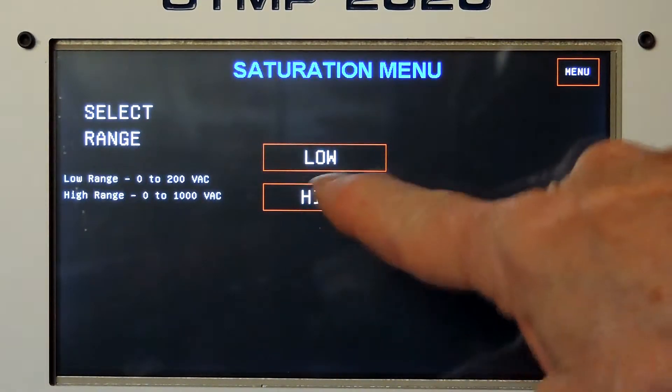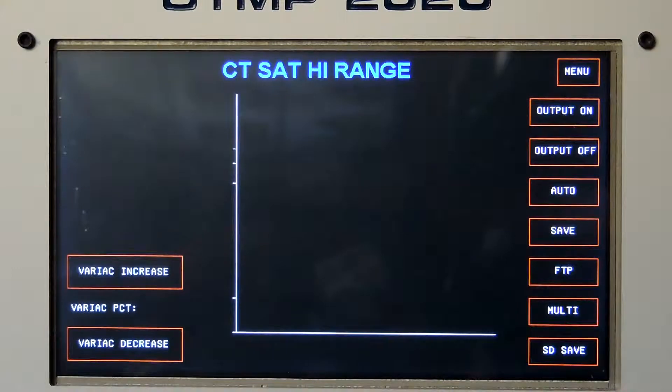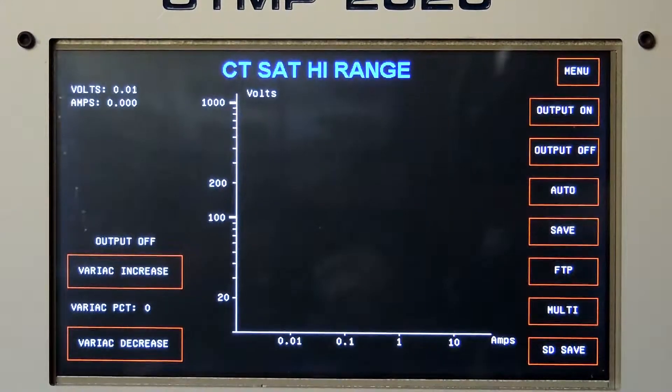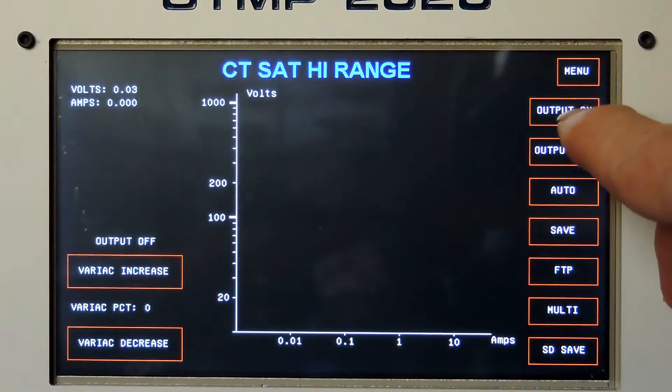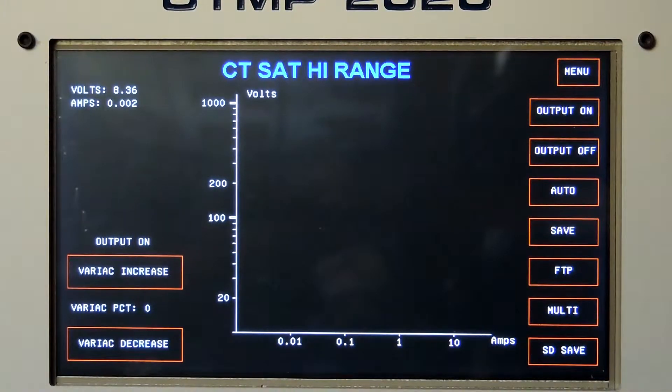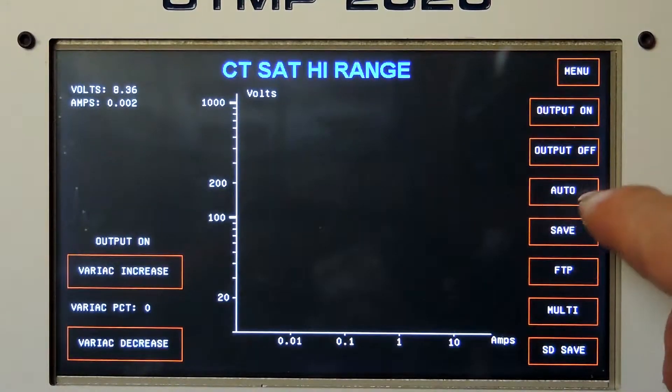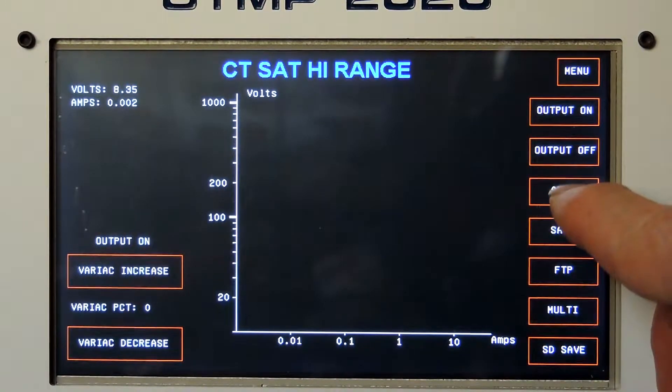I know this one saturates over 200 volts, so I'll select high range. Then all I have to do is turn the output on. I could do a manual test by raising and lowering the variac and recording the readings, but that makes it too difficult, so I'm just going to do the auto test.